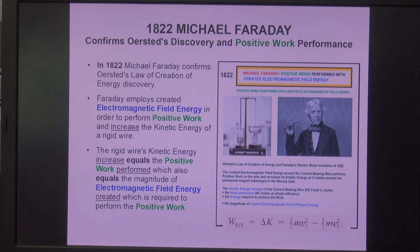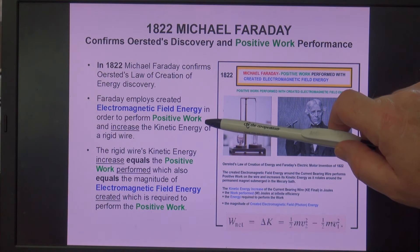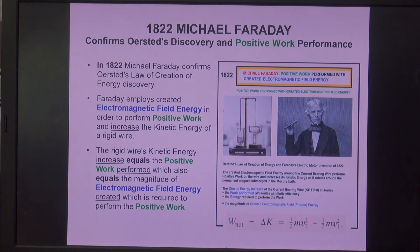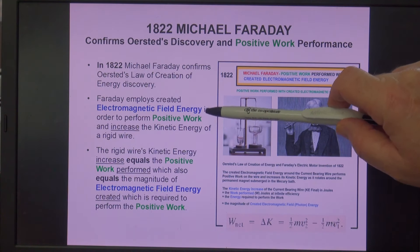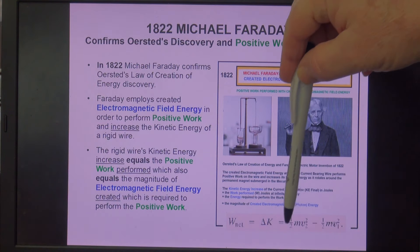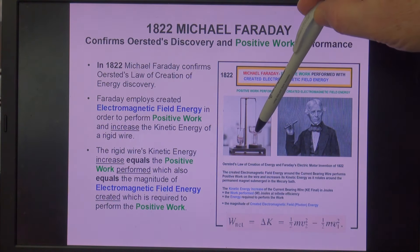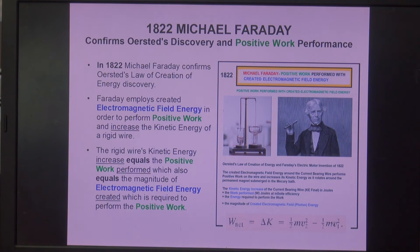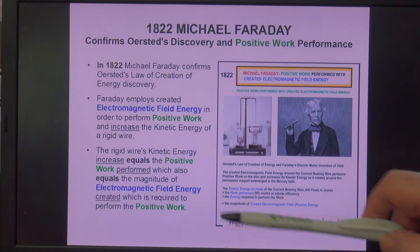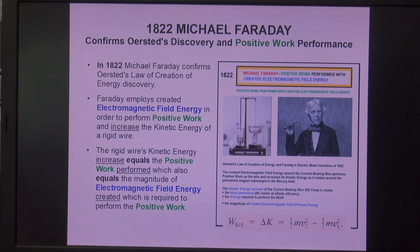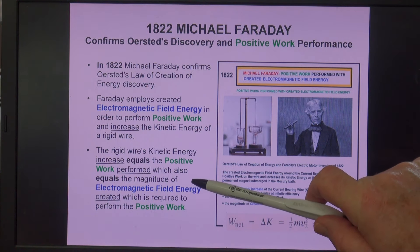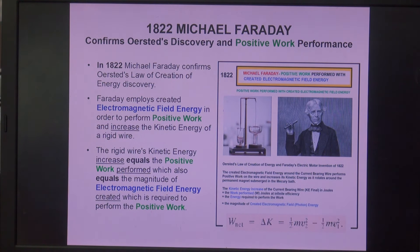In 1822, Michael Faraday confirmed Oersted's Law of Creation of Energy when he employed created electromagnetic field energy to perform positive work and increase the kinetic energy of a rigid wire that rotated around a permanent magnet submerged in a bowl of mercury. The rigid wire's kinetic energy increase equals the positive work performed, which also equals the magnitude of electromagnetic field energy created that is responsible for performing the work.